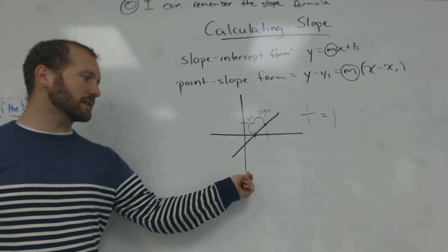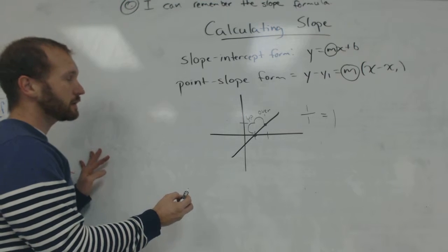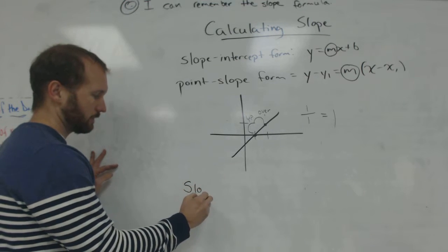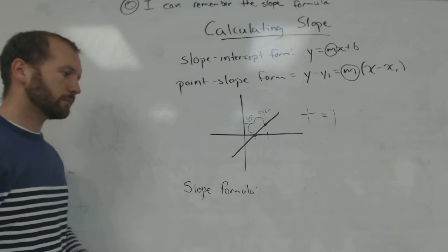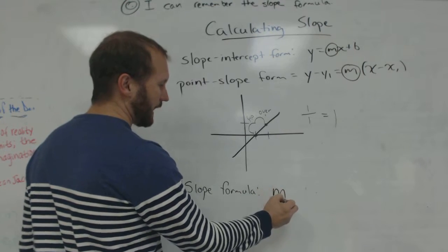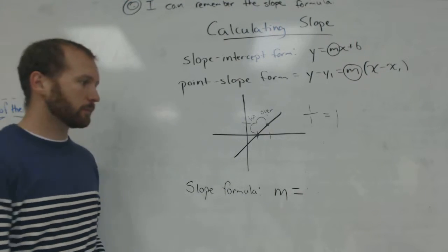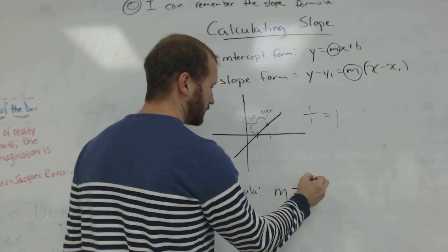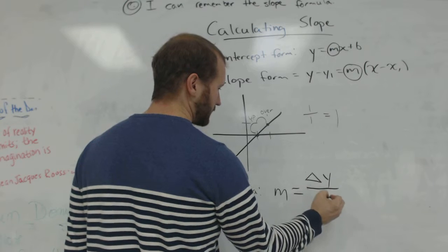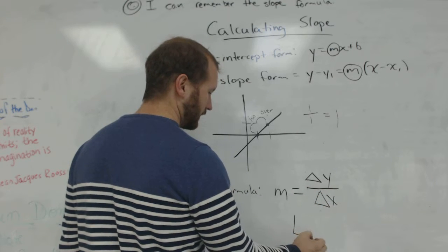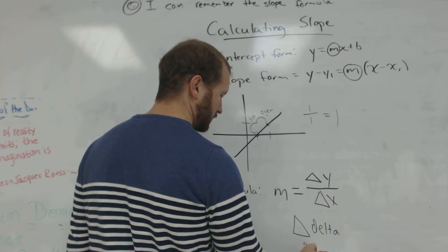There's actually a way that we can just simply calculate the slope between any two points. And that's called the slope formula. It looks like this. Usually we're going to say m equals, because m stands for slope. And there's two ways of writing it. We can write delta y over delta x. Where the delta, this is a Greek letter, stands for change in.